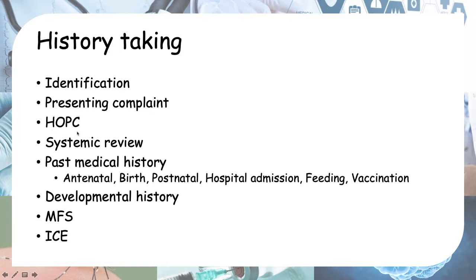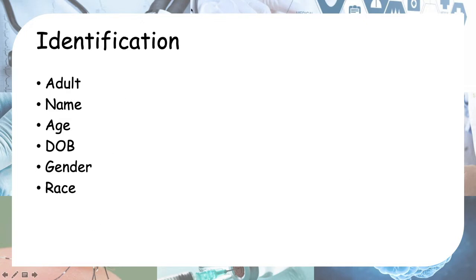Then history of presenting complaint, systemic review, and past medical history — which includes antenatal history, birth history, postnatal history, and hospital admissions. Next is feeding and vaccination history, then developmental history, and then MFS, which stands for medication history including allergies, family history, and social history. I stands for ideas, concerns, and expectations.